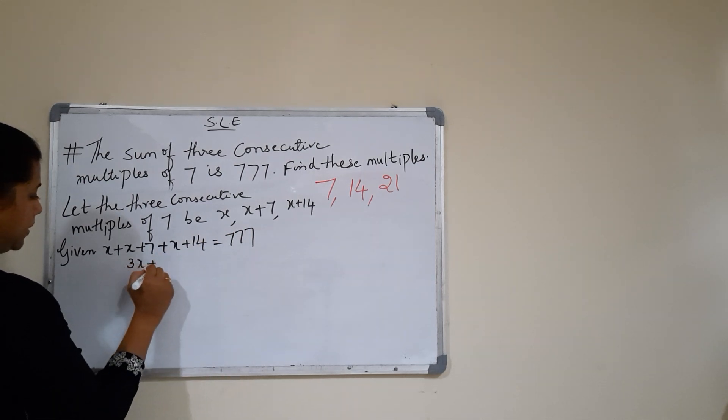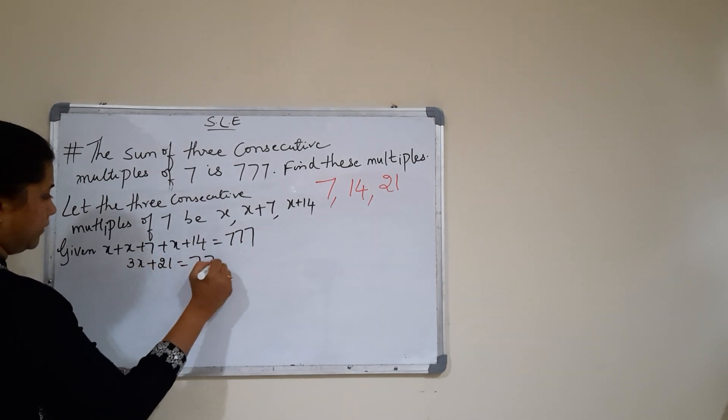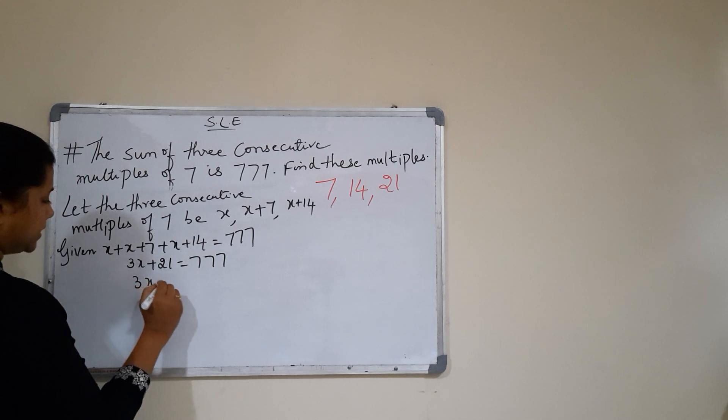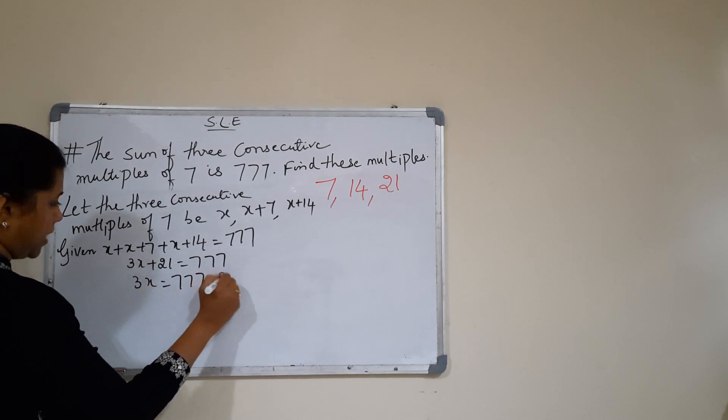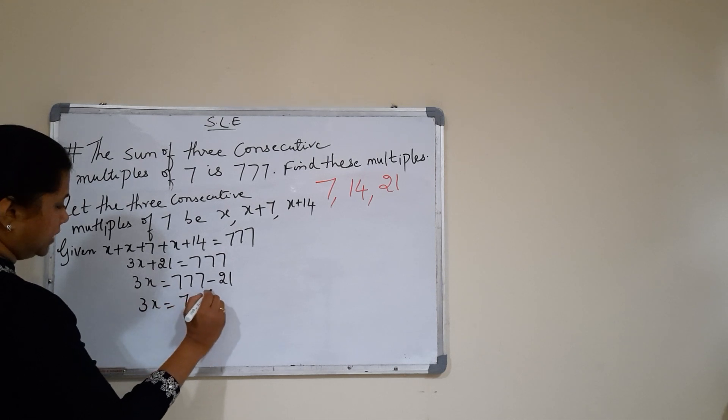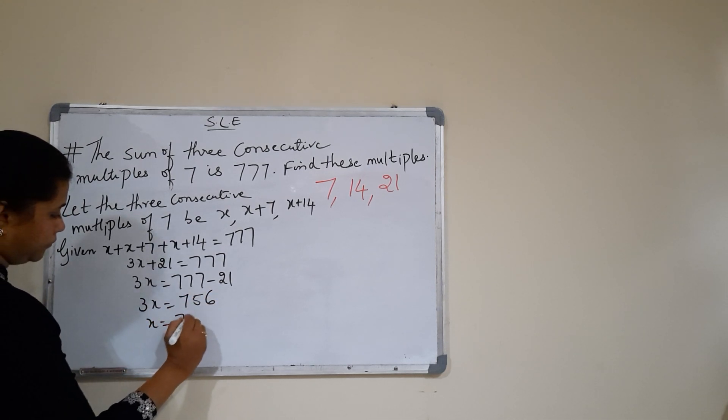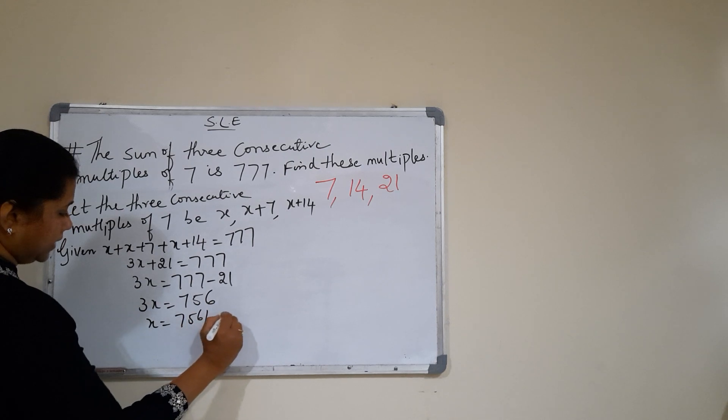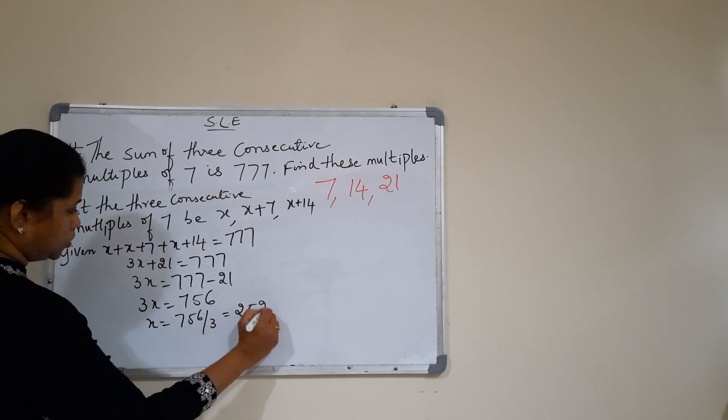3x plus 21 is equal to 777. 3x is 777 minus 21. That is 3x is equal to 756. x is equal to 756 by 3, that is 252.